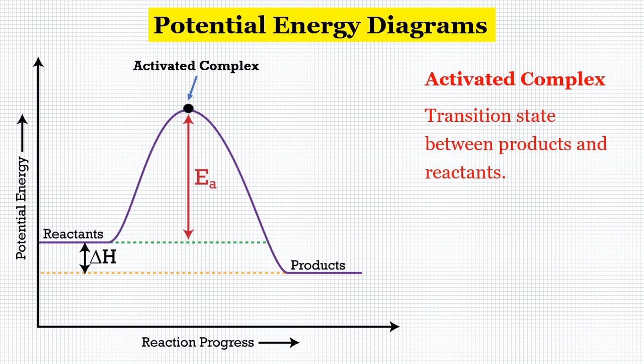In chemistry, we also see potential energy. But instead of a ball rolling down a hill, we have a chemical reaction. In this diagram, we have our reactants — which is what we're starting with — and our products, which is what we're finishing with. Think about baking cookies: our reactants would be all of the ingredients we're combining, and our products would be the cookie dough before it goes into the oven.